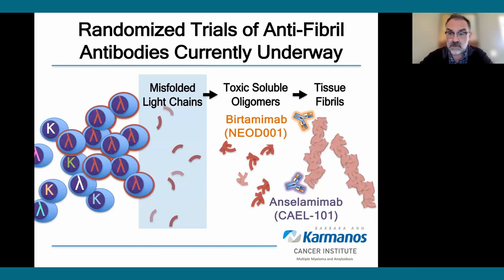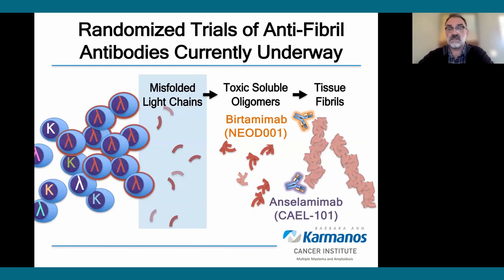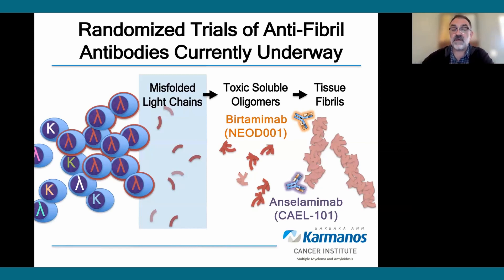We'll see — the jury's out. We do have some hints this strategy may work from early-stage studies with Anselamumab and from a previously conducted randomized study showing improvement in cardiac outcomes in patients with the most advanced cardiac involvement treated with Birtamumab. In the next year or two, we expect to see the first results from these ongoing studies in cardiac amyloid patients. If it turns out to work, it's certainly going to be a strategy applied to renal involvement as well. Thank you so much for your attention today.